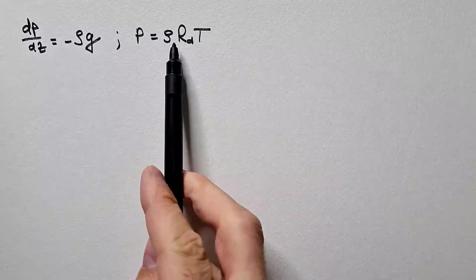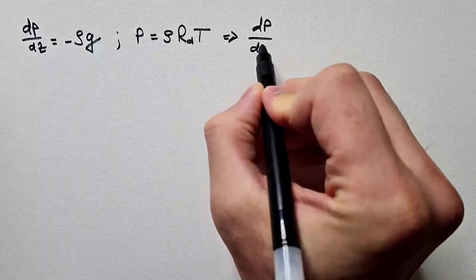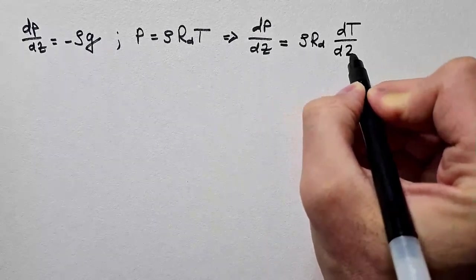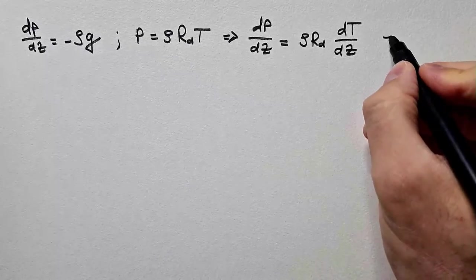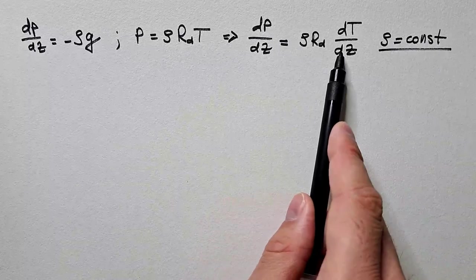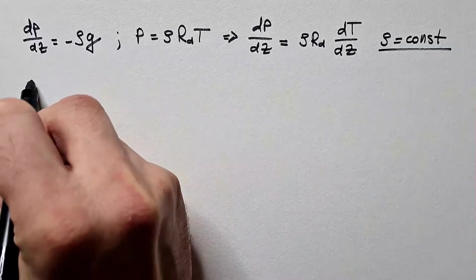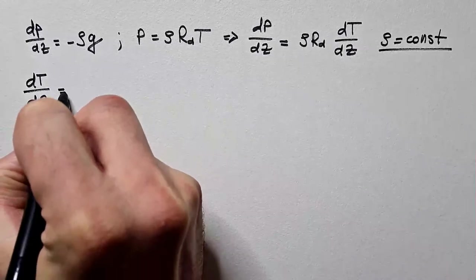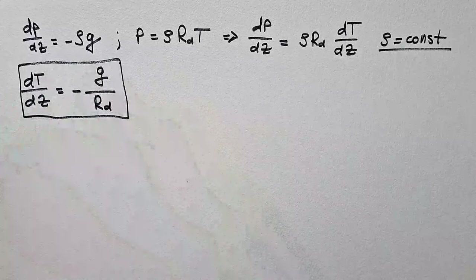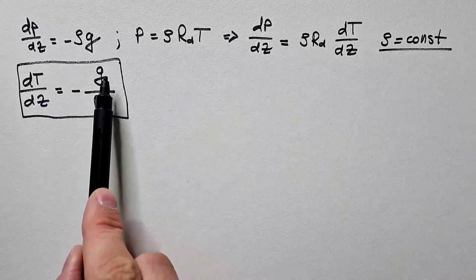Now I will differentiate this equation with respect to height. That will give me dp/dz = ρRd dT/dz. Remember that in this video ρ is constant. Now I can combine hydrostatic equation and this expression, noticing that ρ and ρ will cancel and I will get that dT/dz = -g/Rd. And this is temperature lapse rate in the atmosphere with constant density. We see it is a constant value g over Rd.